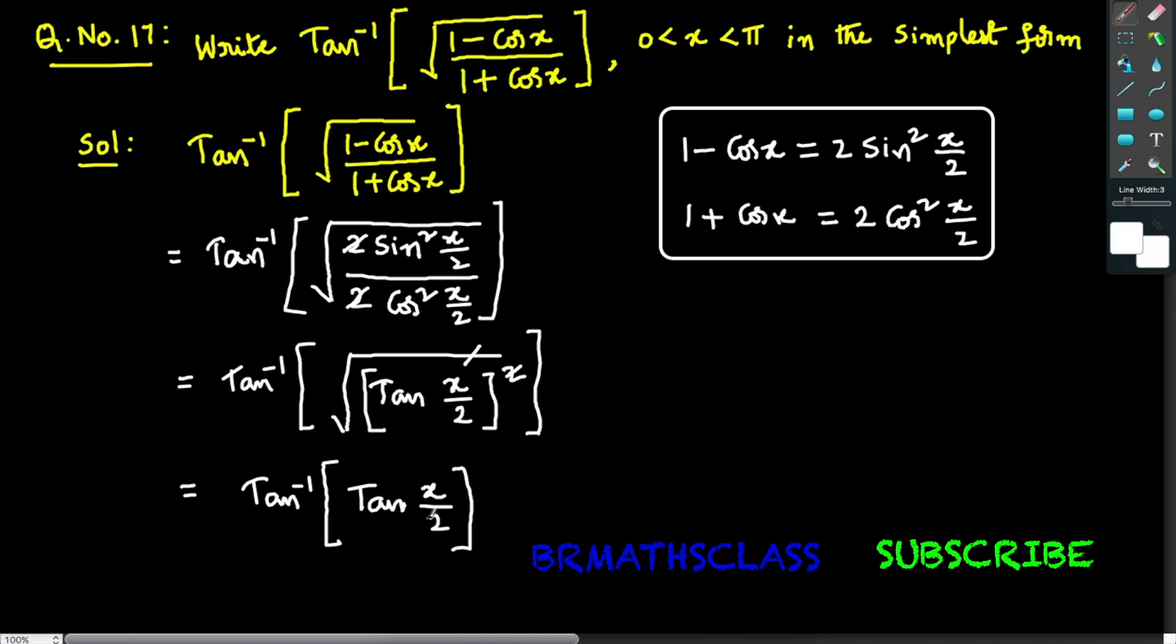The remaining expression is tan inverse of tan(x/2). From properties of inverse trigonometric functions, we know this formula: tan inverse of tan theta equals theta. You observe tan inverse of tan(x/2) is of the form tan inverse of tan theta. So the formula gives us x/2.